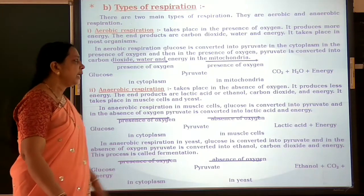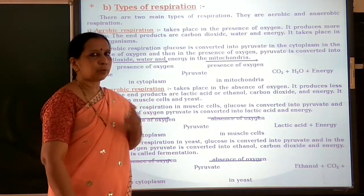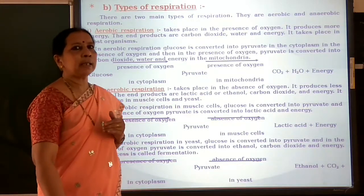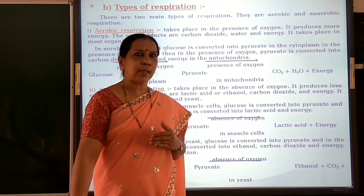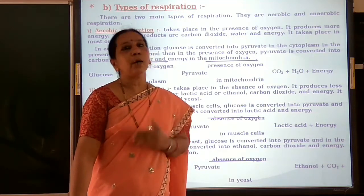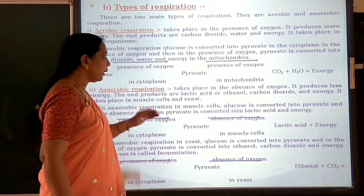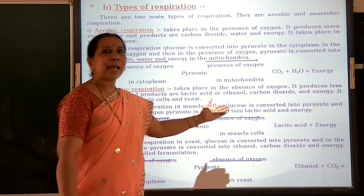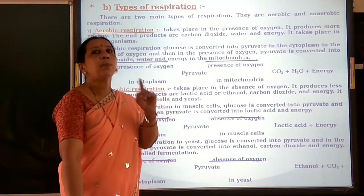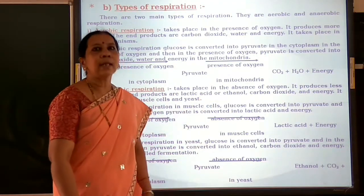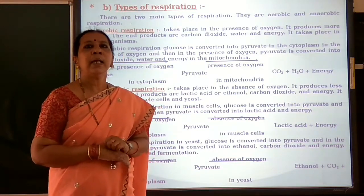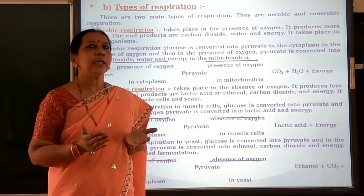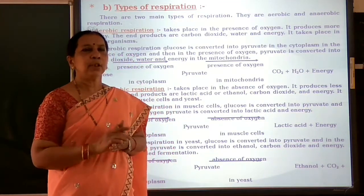In anaerobic respiration in muscle cells, glucose is first converted into pyruvate in the cytoplasm. Then, when muscle cells face lack of oxygen during sudden activity, pyruvate in the absence of oxygen gets converted into lactic acid and energy. This lactic acid accumulates in the muscle cells, causing cramps during sudden activity.